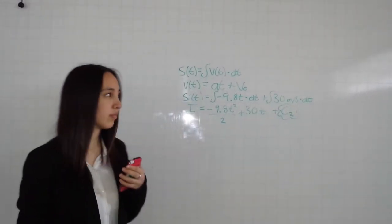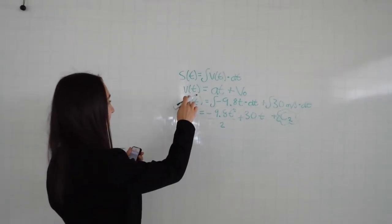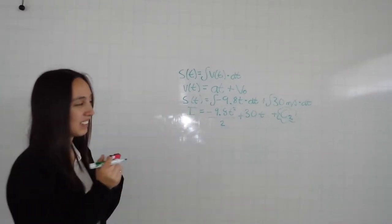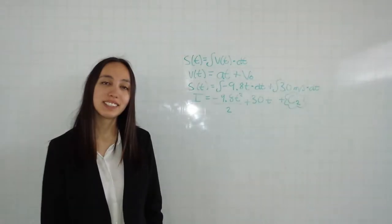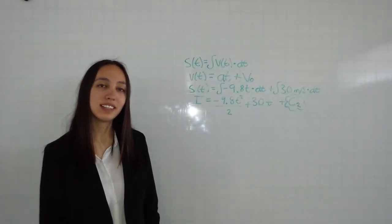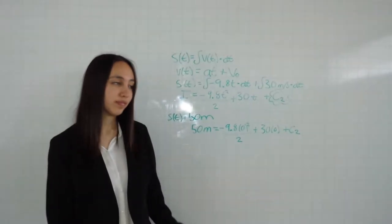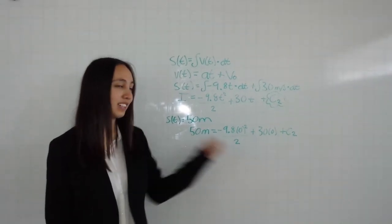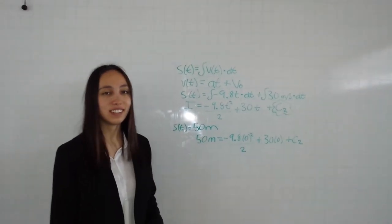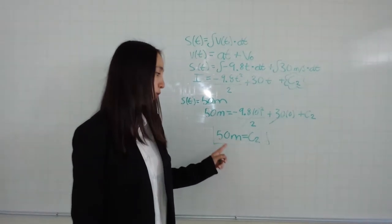Now we need to solve for c2 in order to get the value for the second constant. We know that s of t is equal to 50 meters, so we equal our integral to 50 and the time is zero, again as in the last step. That gives us that c2 is equal to 50 meters.